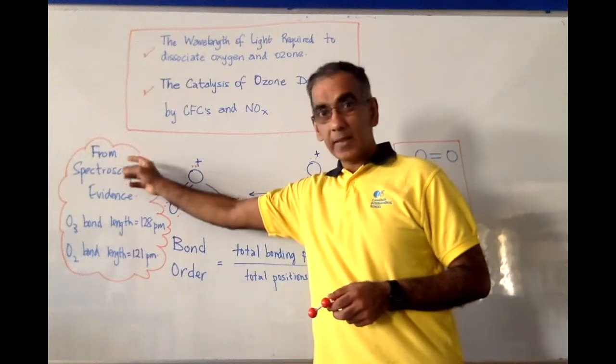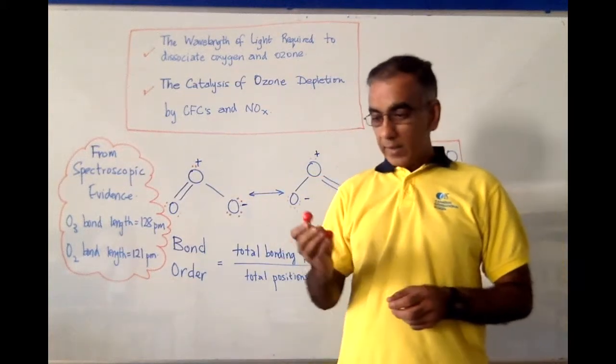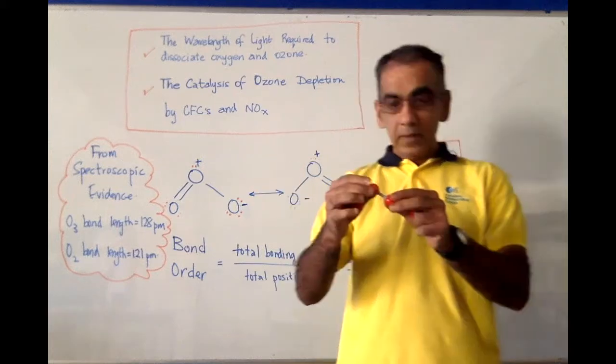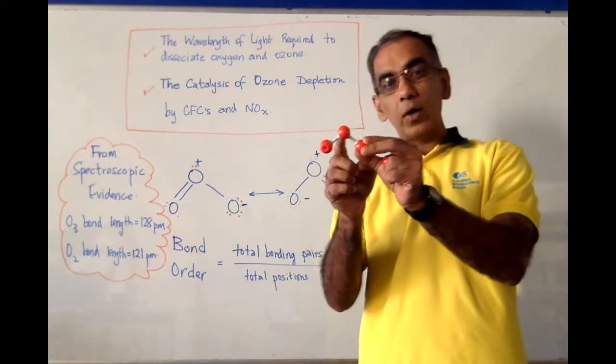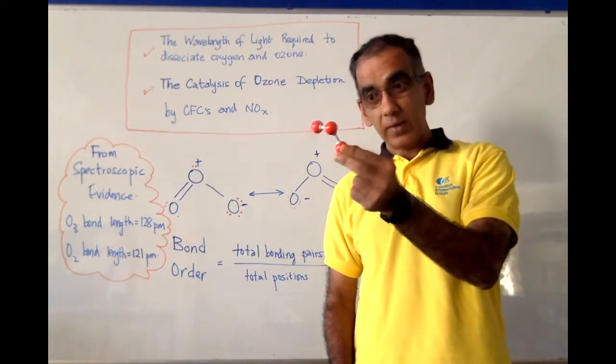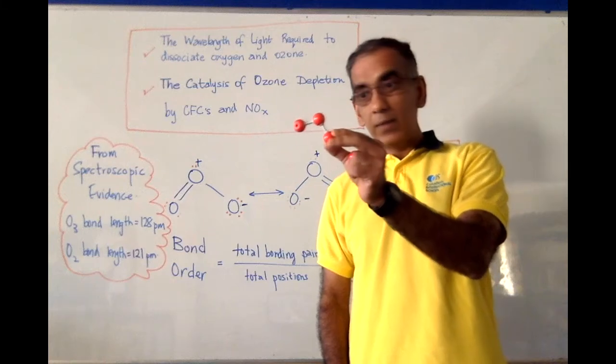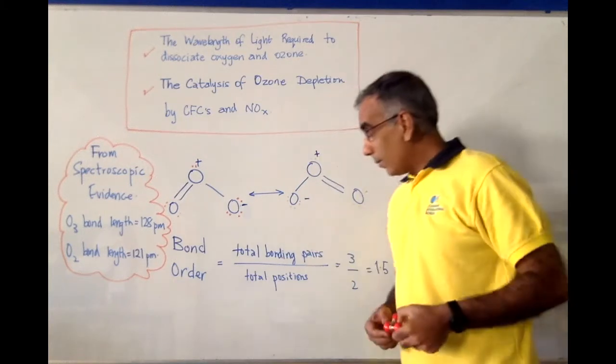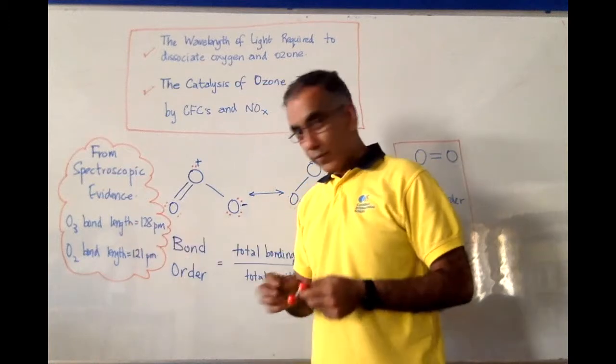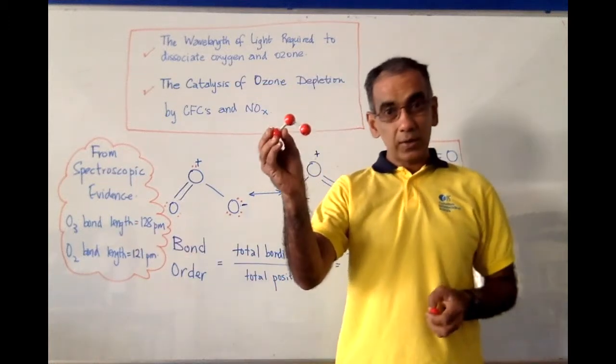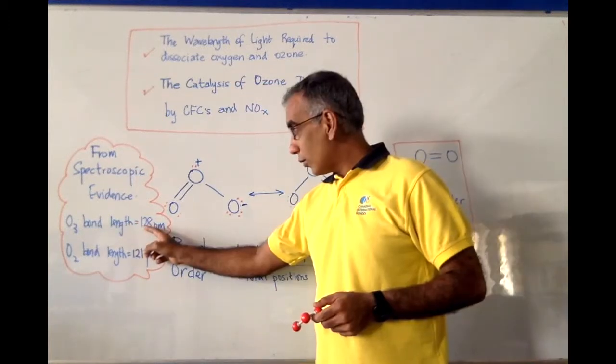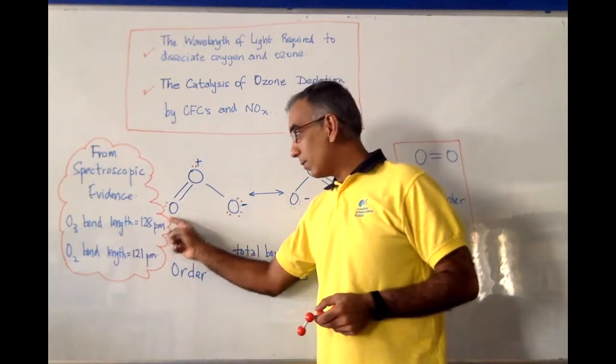From spectroscopic evidence, it is known that the structure of ozone is not made up of two oxygen-to-oxygen single bonds as this limited molecular model suggests. But in fact, the bond length of an oxygen-to-oxygen bond in ozone is shown to be 128 picometers.